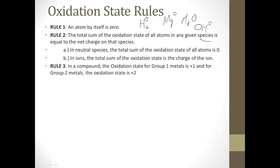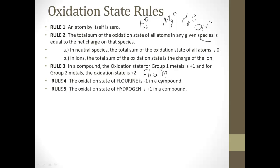In a compound, the oxidation state for Group 1 metals is plus one — you already know that. For Group 2 metals, the oxidation state will be plus two. The oxidation state of fluorine is always negative one. The oxidation state of hydrogen is plus one, almost always — if you have something like lithium hydride (LiH), then the lithium would be plus one and the H would be minus one. The oxidation state of oxygen is minus two.